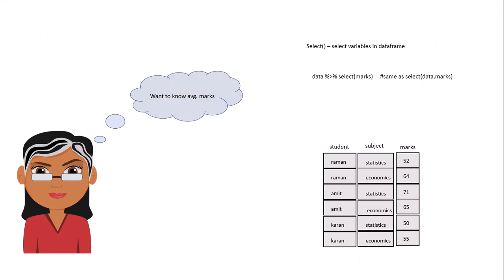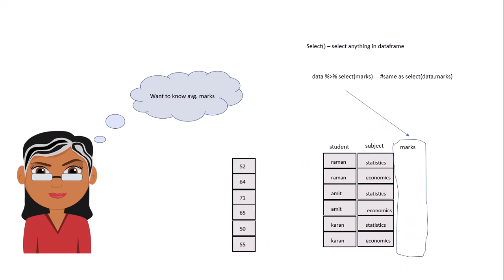This is the syntax — you can also write it using the pipe operator. First you give the data frame as an argument, then you give the column which you want to select. In this example you want to select the marks column, so we write 'marks'. When you run this, it selects the marks column and returns it to you as a table or data frame.